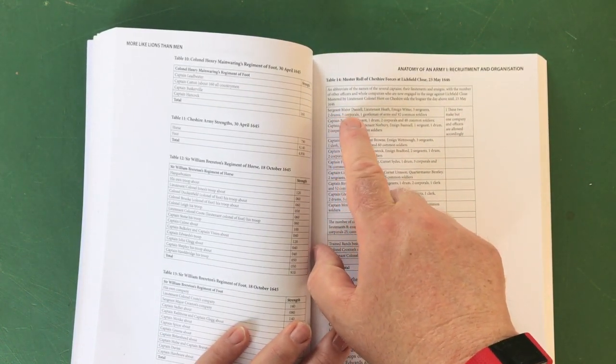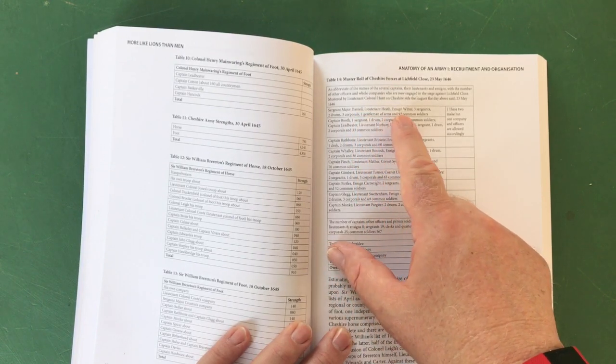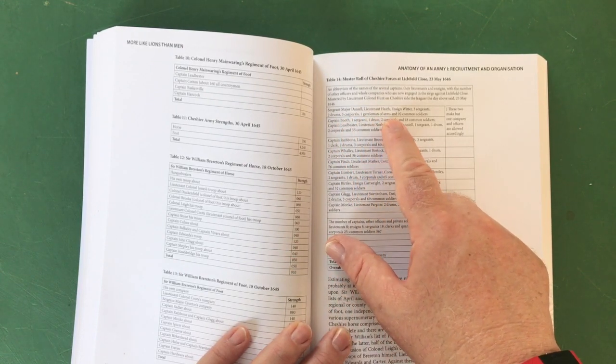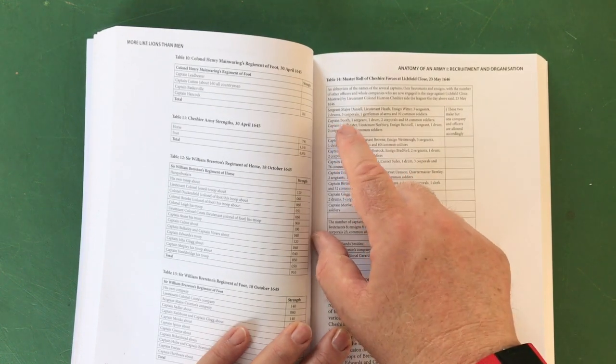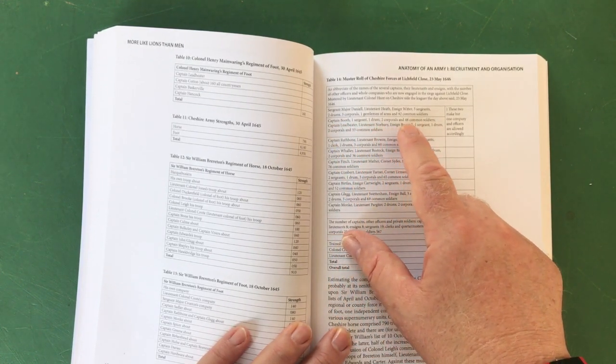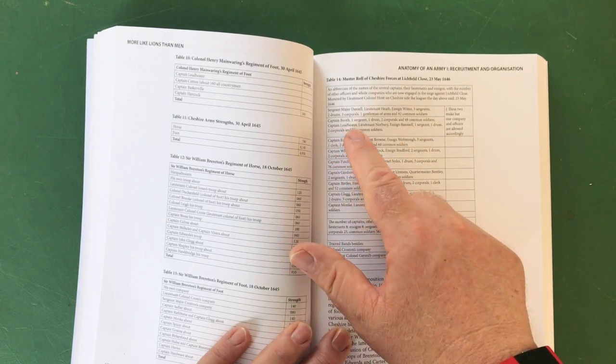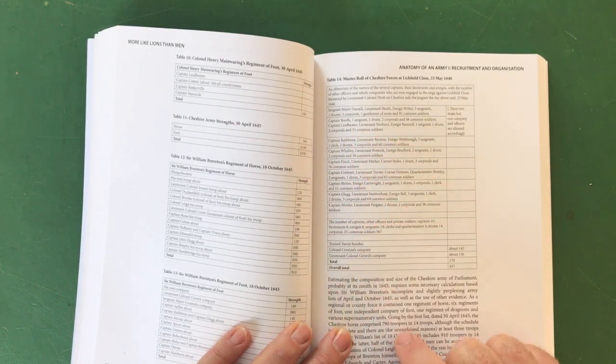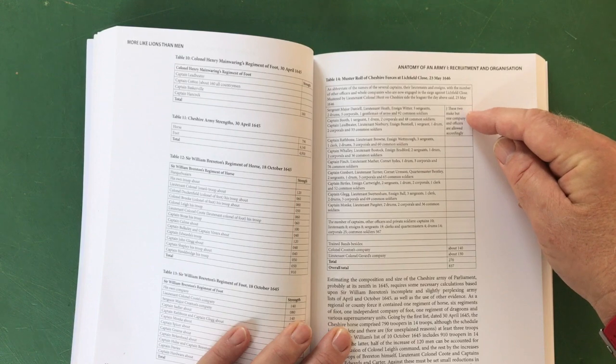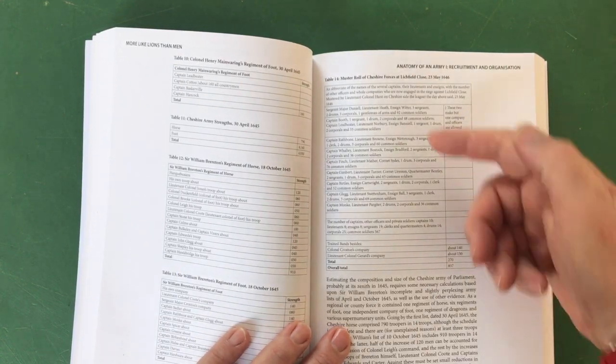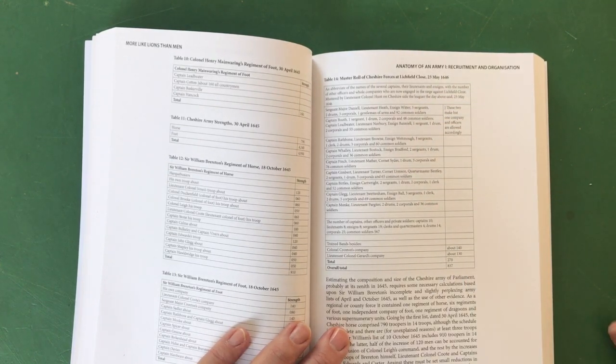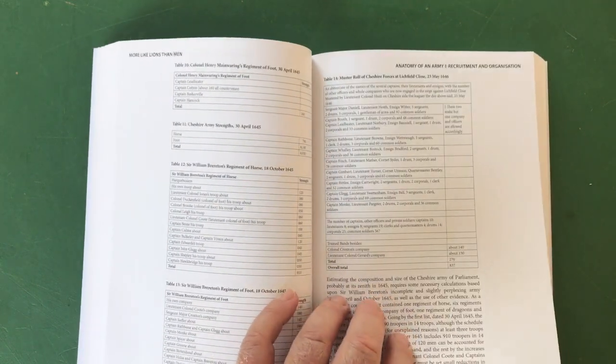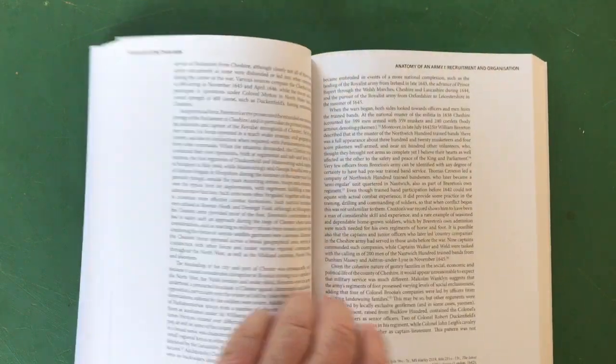How specific is this: Sergeant Major Daniel, Lieutenant Heath, Ensign Witter, three sergeants, two drums, three corporals, one gentleman of arms and 92 common soldiers. And then Captain Booth: one sergeant, one drum, two corporals, 48 common soldiers. Captain Ledbetter, Lieutenant Norbury, Ensign Baniel: one sergeant, one drum, two corporals and 33 common soldiers. And the note is these two make but one company and officers are allowed accordingly. And so it goes. This is fantastic.